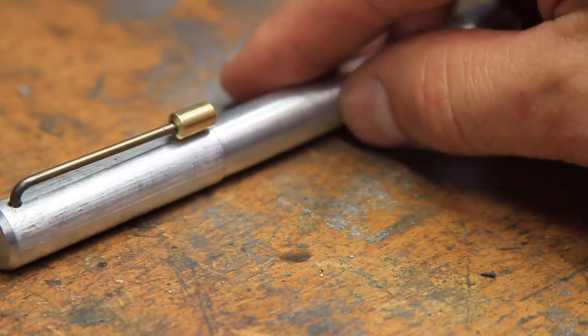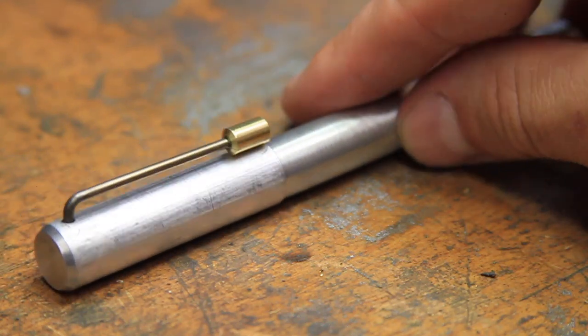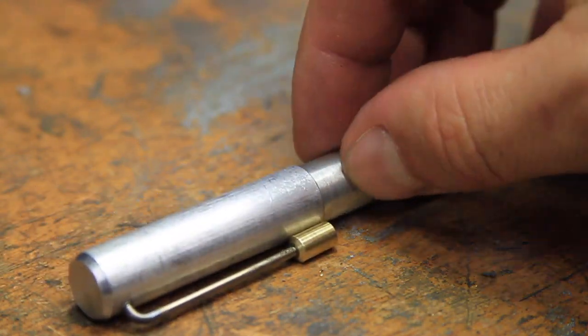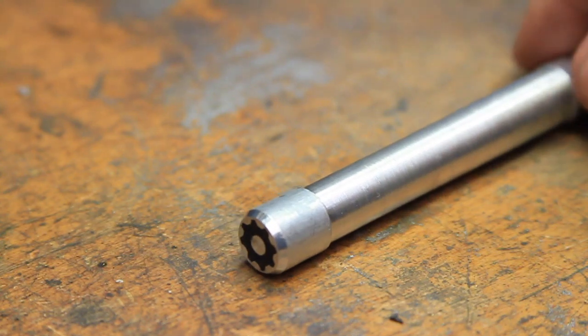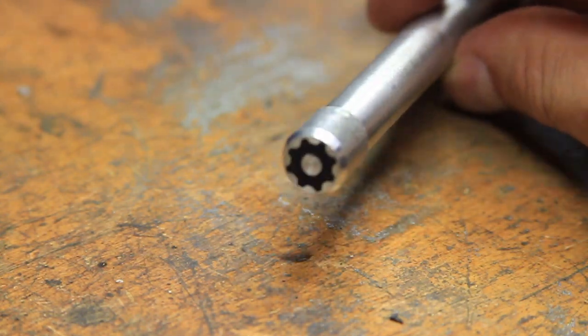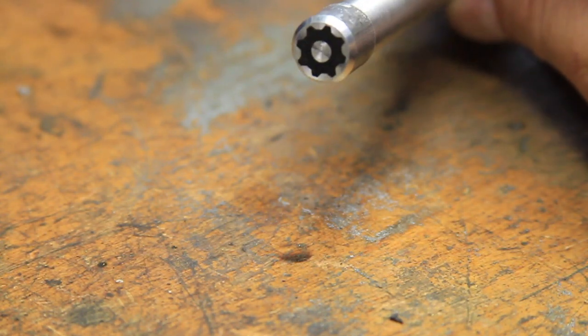If you're interested, I'll link the spring steel and aluminum black, as well as the vinyl cutter and vinyl I used to make the stencil for etching in the description. Otherwise, that's it for this video and I hope you enjoyed it.